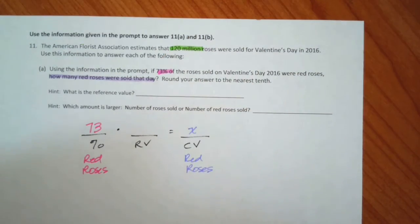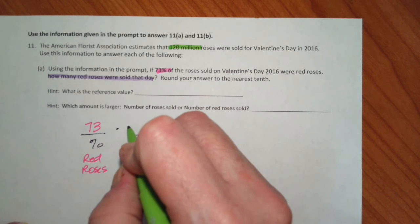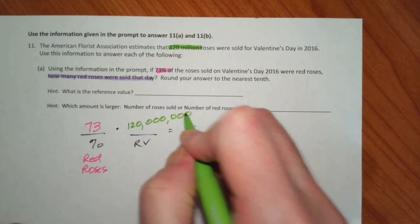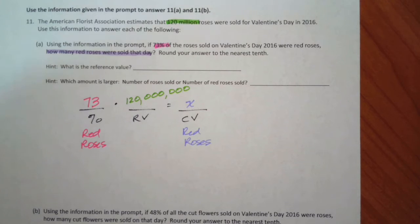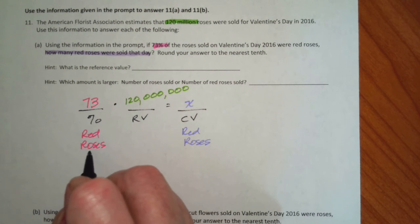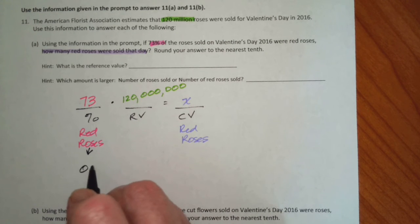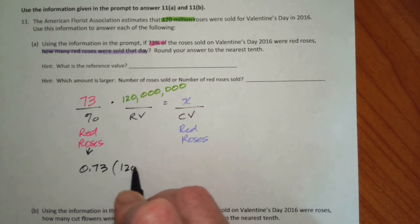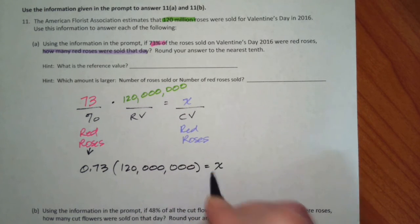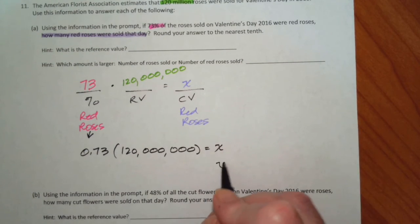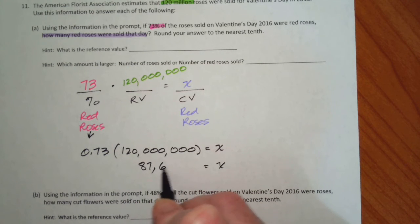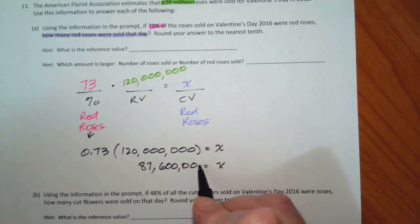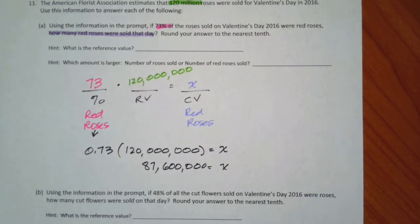That means our reference value must be 120 million. I didn't leave myself enough room here to write 120 million. So this is 120,000,000. Thankfully, this is just a real easy multiplication. We don't have to do any division with this. If I convert this to a decimal, this is 0.73 times 120,000,000 equals what we want to know. So this is 87,600,000. And that sounds about right.